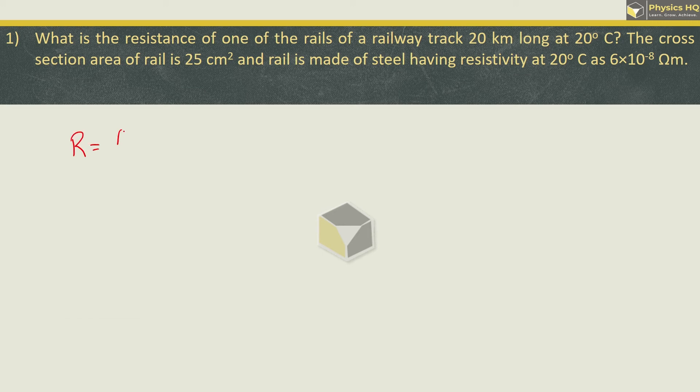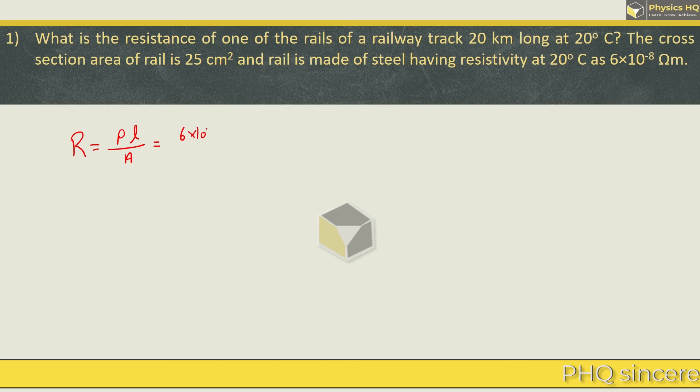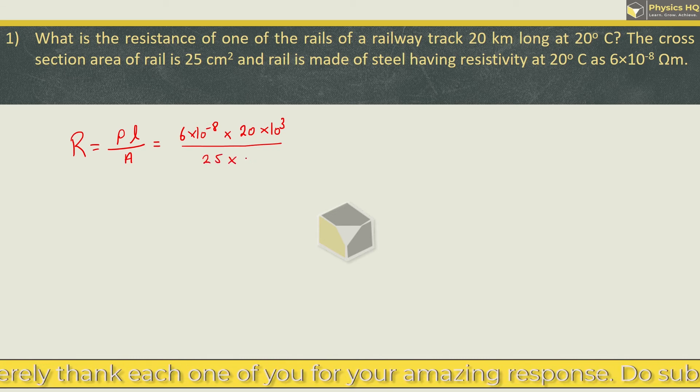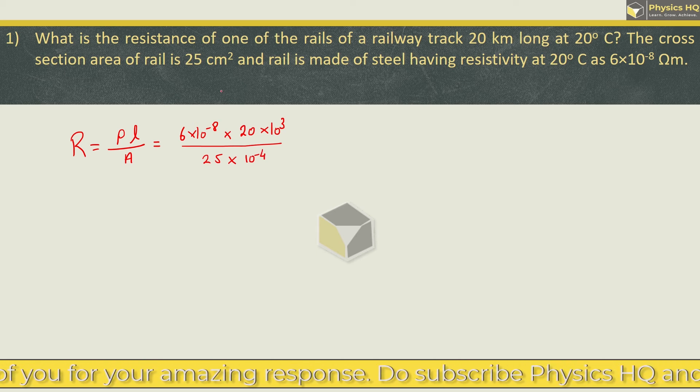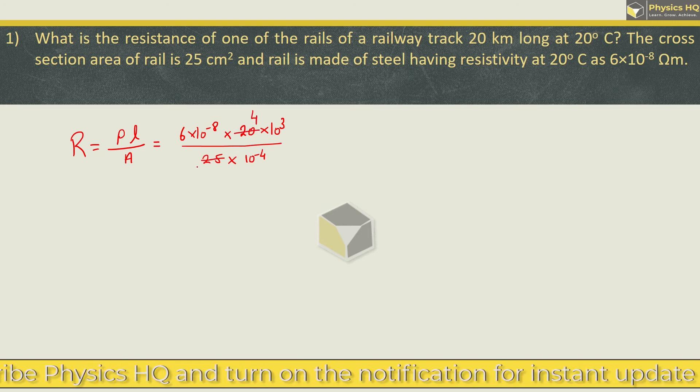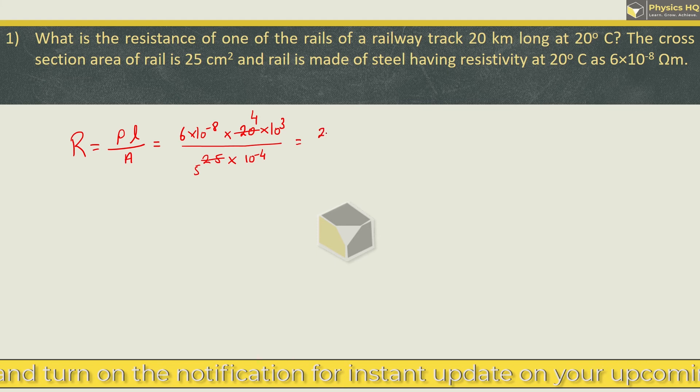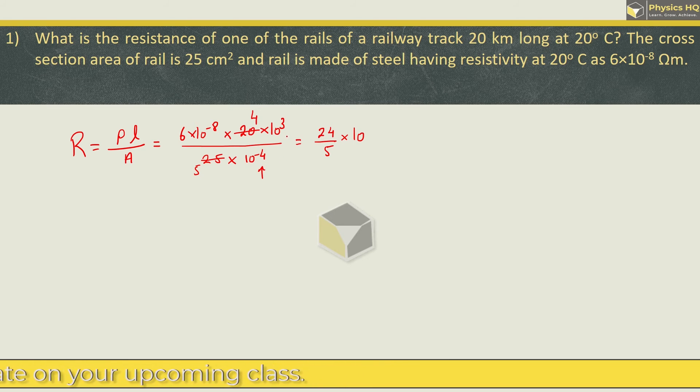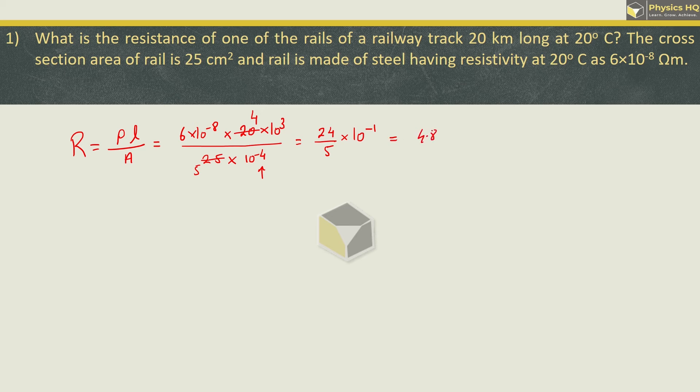So resistance ka formula hai resistivity into length divided by the cross section area. Resistivity is 6 into 10 raise to minus 8. Length is 20 km, in meter is 10 raise to 3 into 20 divided by area is 25 cm squared. If we do this meter square, we will multiply 10 raise to minus 4. Because 1 cm is 10 raise to minus 2 meter square. Now 5 cancels from 25, so we are left with this 24 upon 5 into 10 raise to minus 2. So this will be 4.8 into 10 raise to minus 1 or 0.48 ohm.